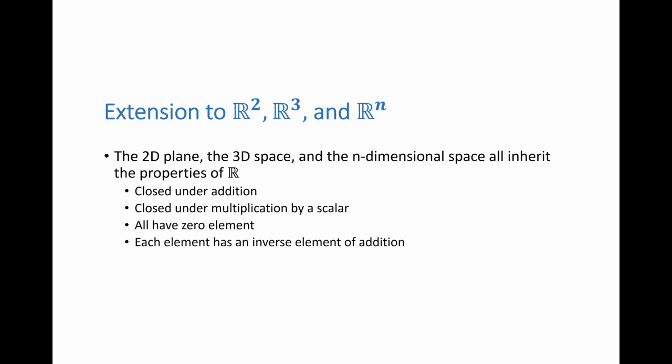These same properties are extended to R2, R3 and Rn. All of these spaces are closed under addition. If I have a vector, a two-dimensional vector, if I add it to another two-dimensional vector, I will get a two-dimensional vector. We call this closed under addition. It's also closed under multiplication by a scalar. If I have any vector and I multiply it by a number, I'm going to get another two-dimensional vector.